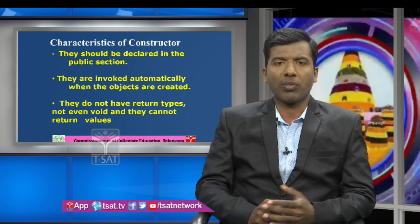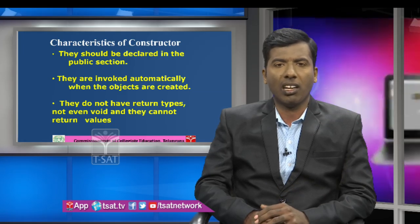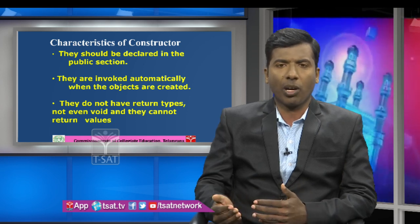When you look at the specialized characteristics of constructors: in C++, we have three types of access specifiers — public, private, and protected. If something is declared under public, it can be directly accessed by an object of the same class. But if declared under private or protected, the object cannot directly access it. The first most characteristic of a constructor is that the constructor should be declared in the public section. It is invoked automatically when objects are created.